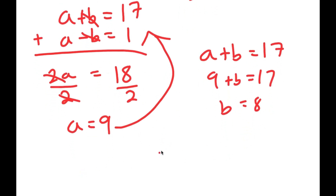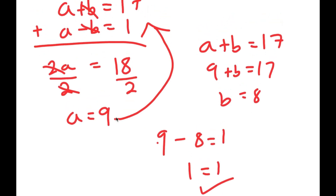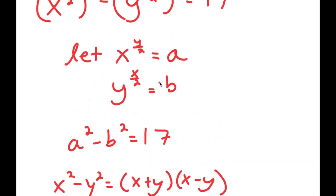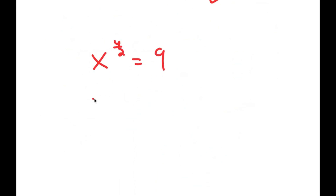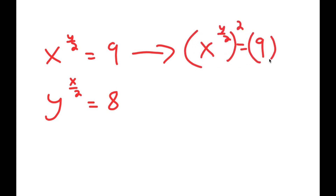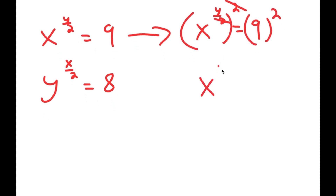We can check: a minus b is 9 minus 8 equals 1. Now that we know a equals 9 and b equals 8, we go back and recall that x to the power of y over 2 equals a and y to the power of x over 2 equals b. So x to the power of y over 2 equals 9 and y to the power of x over 2 equals 8. Taking the power of 2 on both sides of the first equation, those cancel out and I get x to the power of y equals 81.